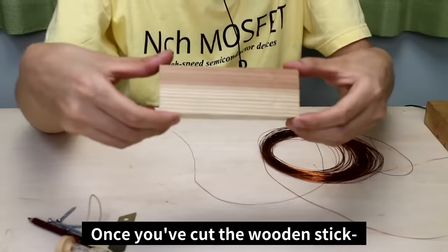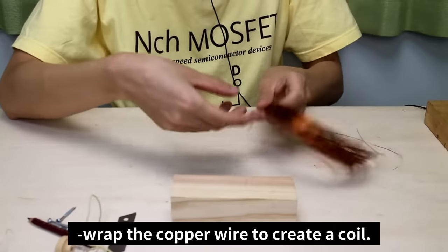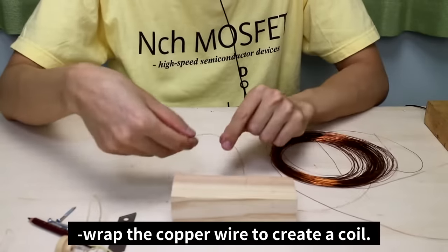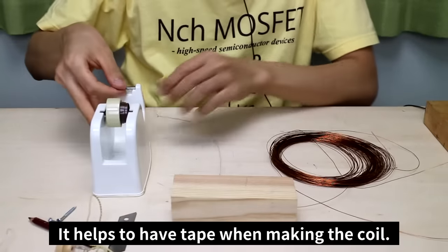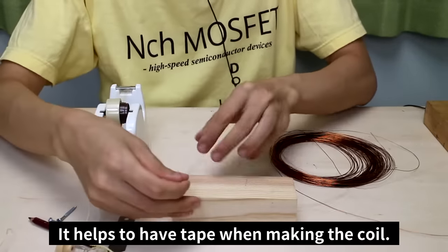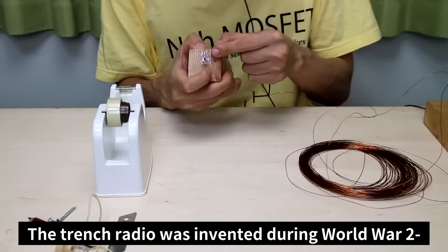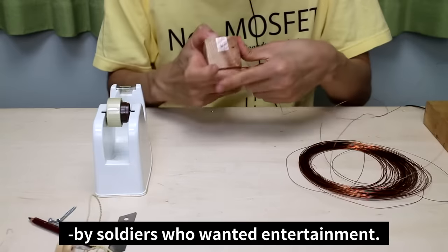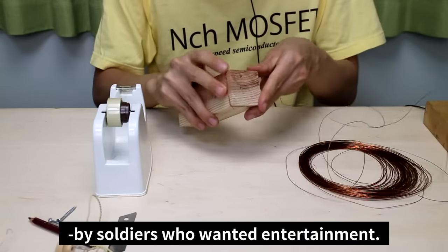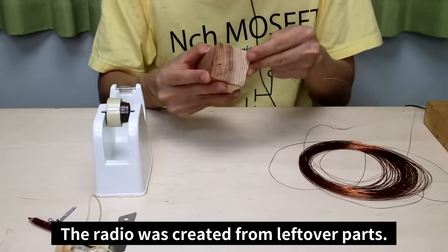Once you've cut the wooden stick, wrap a copper wire to create a coil. It helps to have tape when making the coil. The trench radio was invented during World War II by soldiers who wanted entertainment. The radio was created from leftover parts.